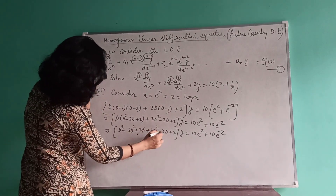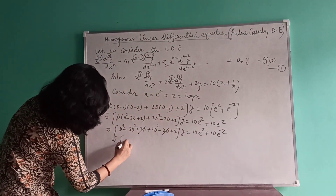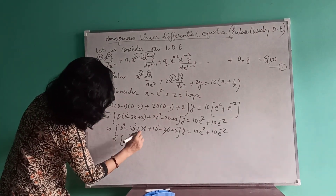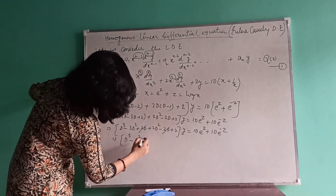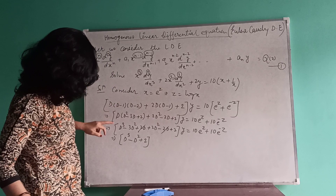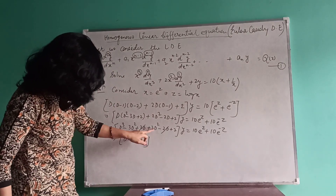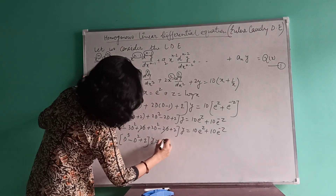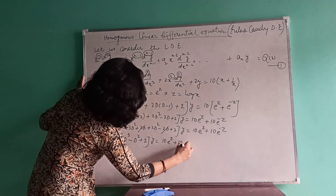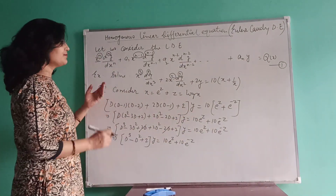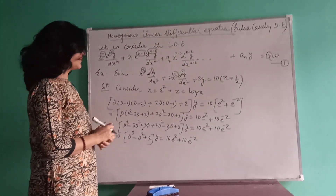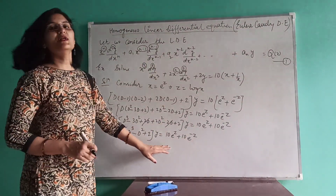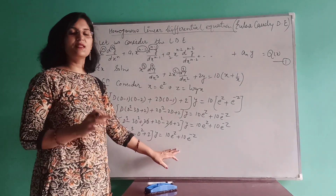Simplifying further: the 2D and minus 2D terms cancel out. Combining like terms: minus 3D² plus 2D² gives minus D². So the equation reduces to: (D³ minus D² plus 2) y equals 10e to the power z plus 10e to the power minus z. We have now reduced the differential equation to a linear differential equation with constant coefficients.